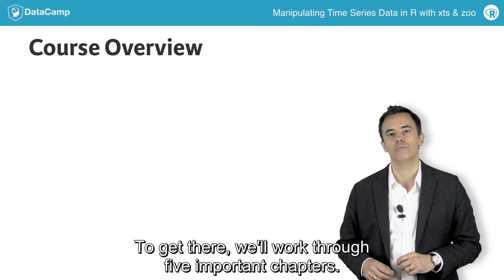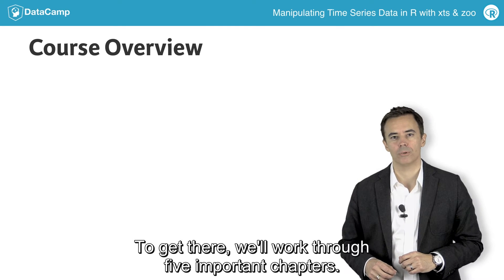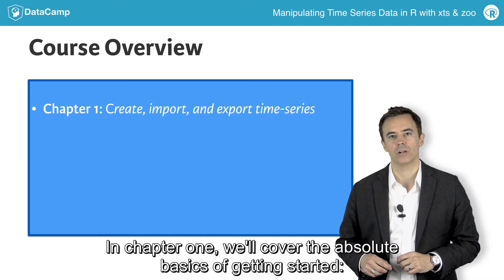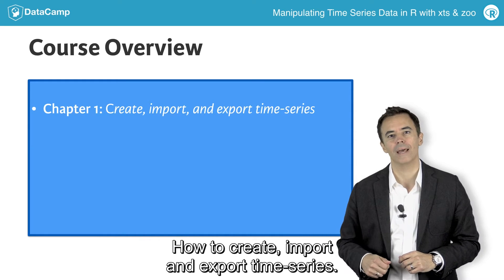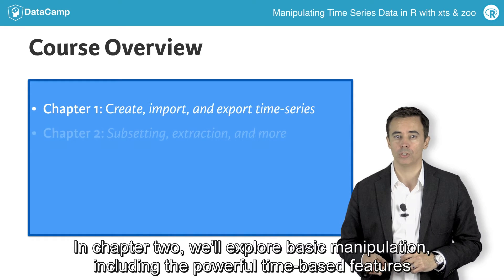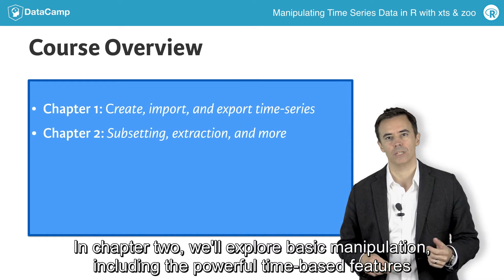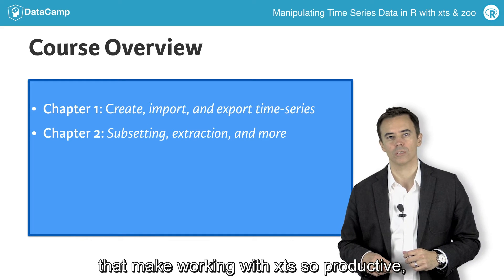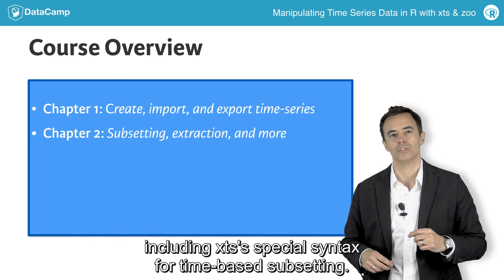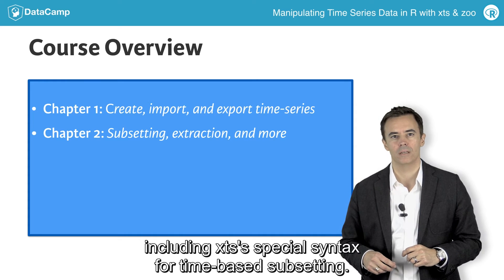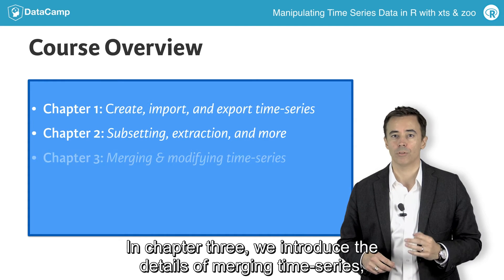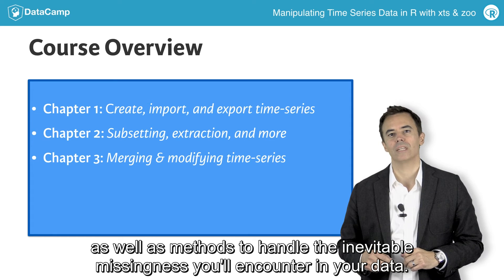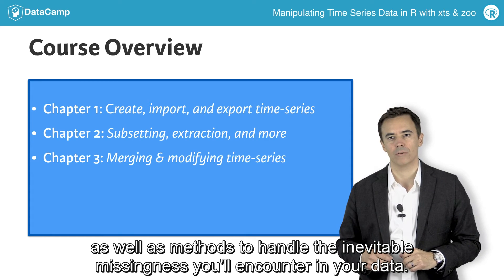To get there, we'll work through five important chapters. In chapter one, we'll cover the absolute basics of getting started — how to create, import, and export time series. In chapter two, we'll explore basic manipulation, including the powerful time-based features that make working with XTS so productive, including XTS's special syntax for time-based subsetting. In chapter three, we introduce the details of merging time series, as well as methods to handle the inevitable missingness you'll encounter in your data.